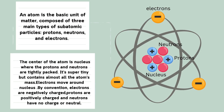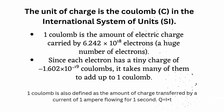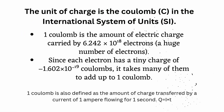Electrons move around the nucleus by convention. Electrons are negatively charged. Protons are positively charged and neutrons have no charge — they are neutral. The Coulomb matters in atoms because it is the unit used to measure the electric charge of subatomic particles, which governs how they interact. For example, one Coulomb is the amount of electric charge carried by 6.242 × 10¹⁸ electrons — a huge number of electrons.